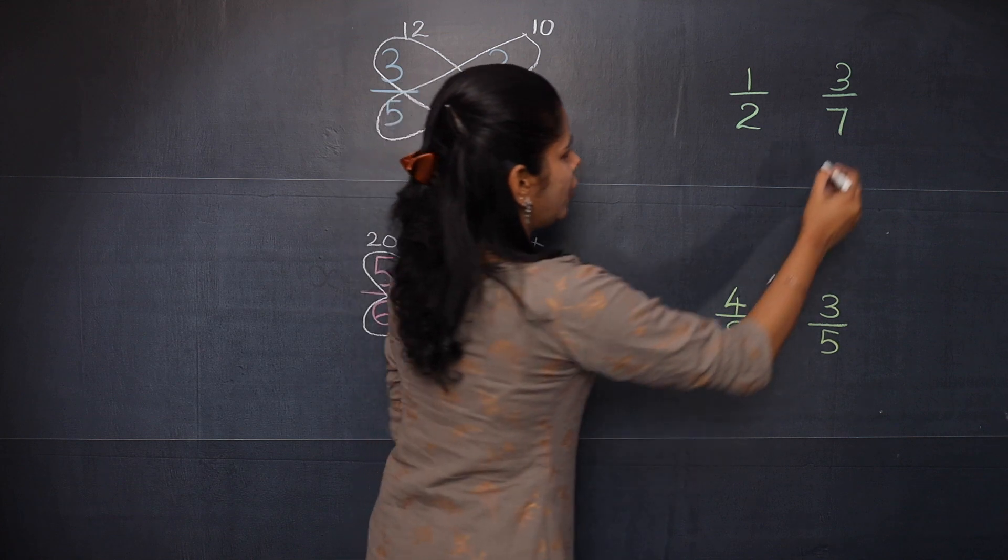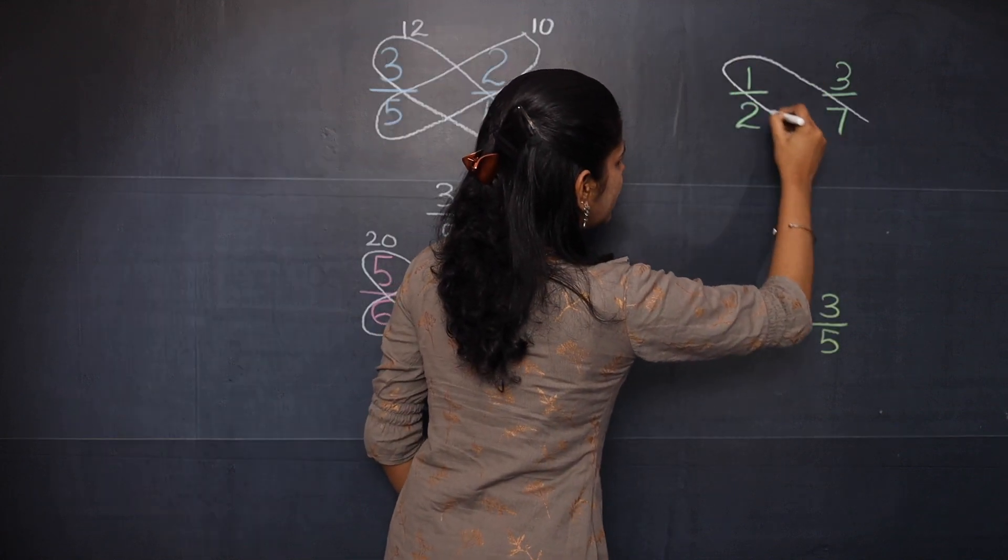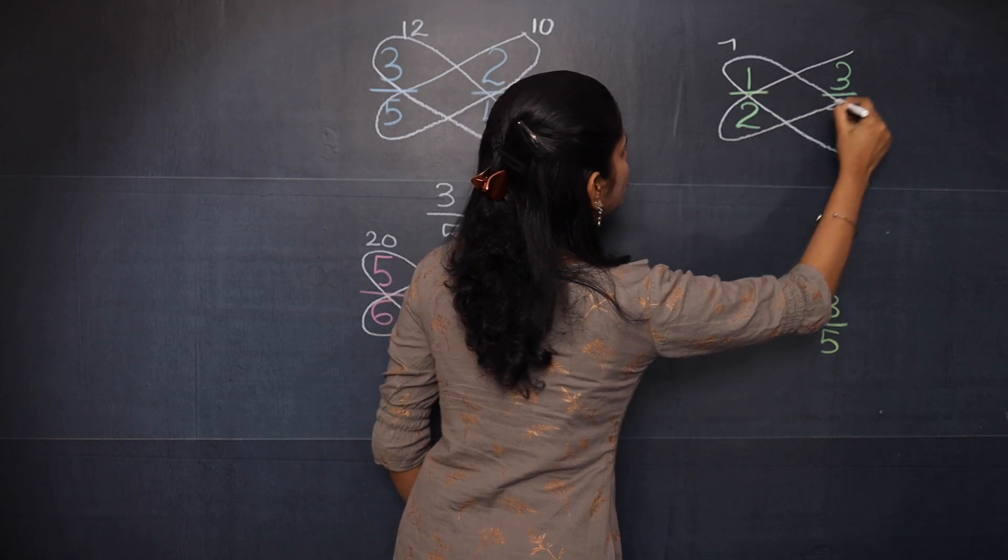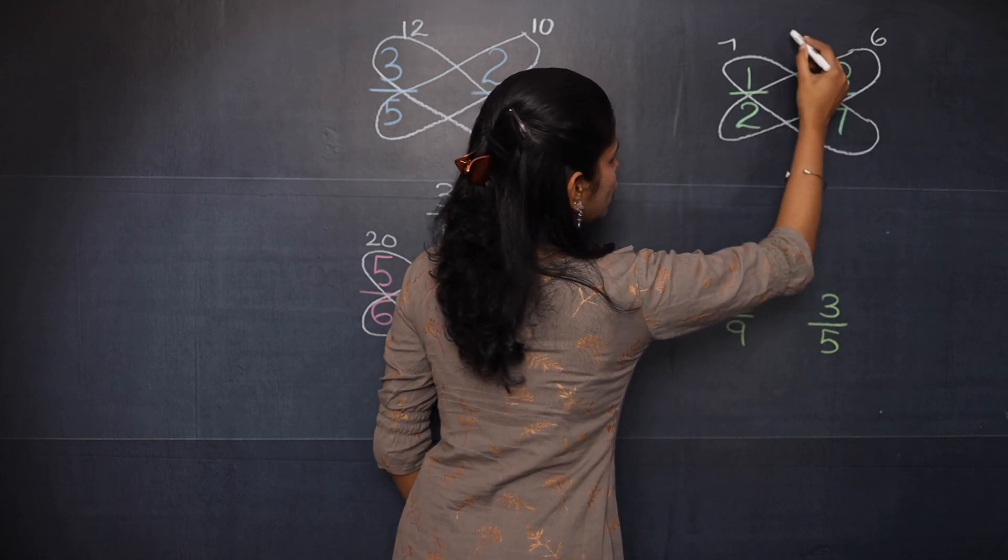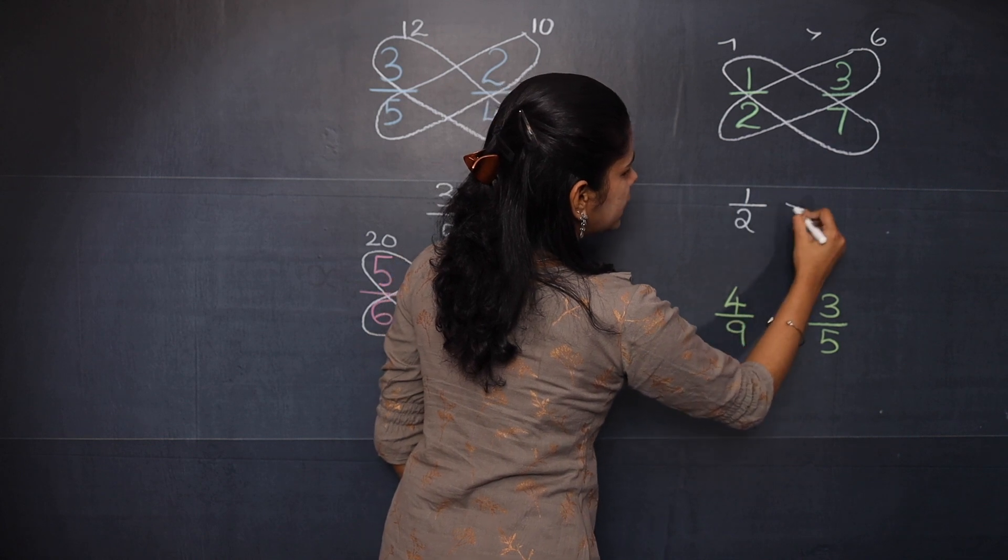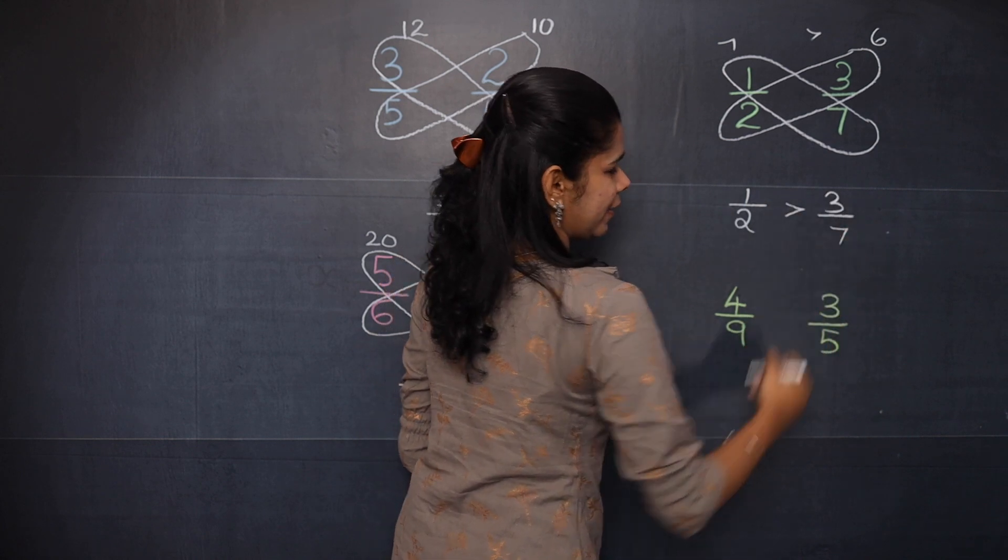Now let's check this. When you use the butterfly method here, 1 into 7 is 7 and 3 into 2 is 6. So 7 is greater than 6, which means 1 by 2 is greater than 3 by 7.